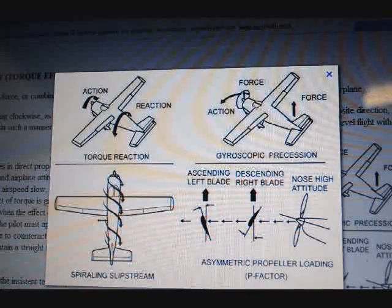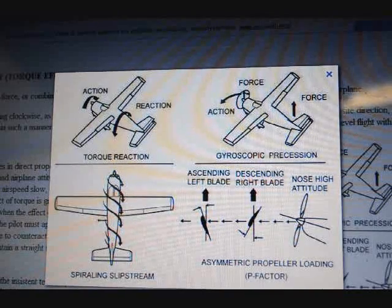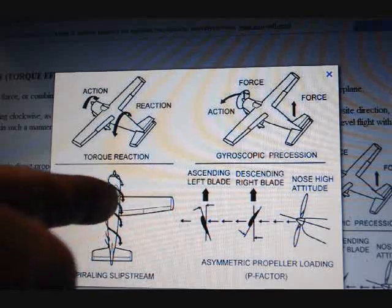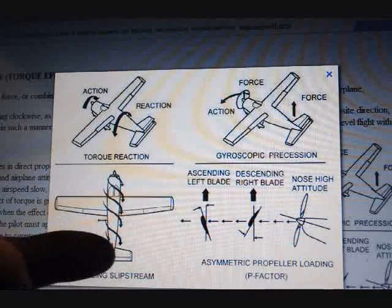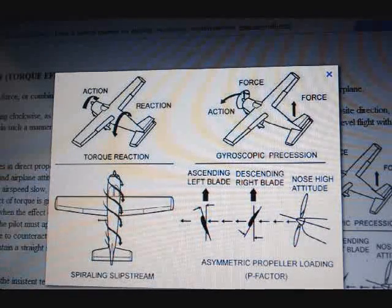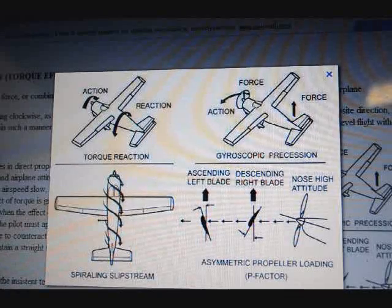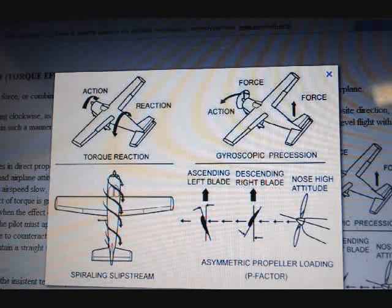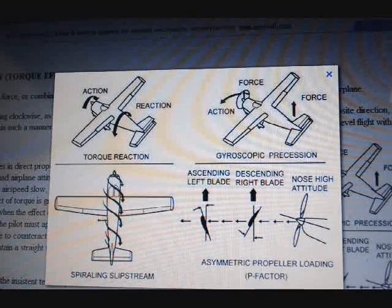Spiraling slipstream: when the propeller is spinning and creating thrust, some of that air moves over the aircraft and it slips around and hits the tail, causing a yaw in the left — nose left — direction. It hits the left side of the vertical stabilizer and rudder, pushes the nose left, pushes the tail to the right, bringing the nose to the left. That's a left-turning tendency.